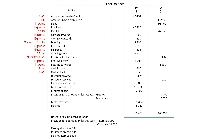Discount allowed — expense. Discount received — income. Bad debts written off — expense. Motor van at cost — asset. Fixtures at cost — asset. Provision for depreciation for last year — contra asset.